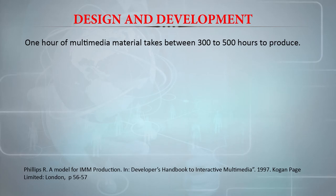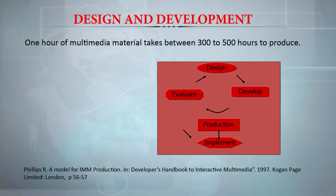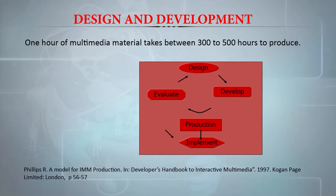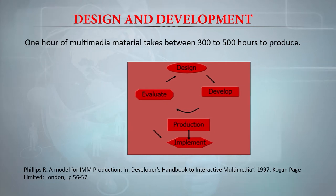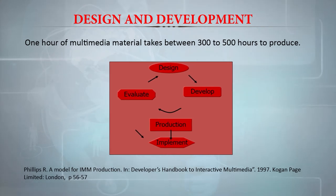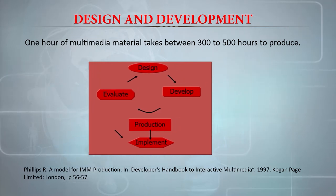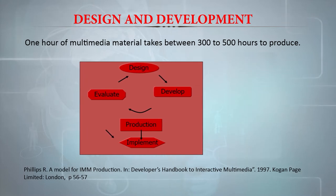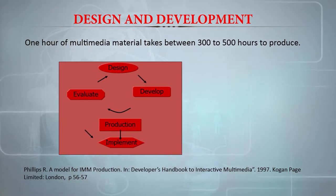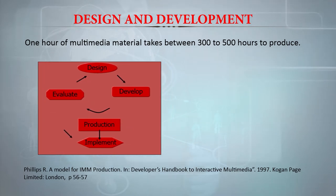The basic elements for designing are: design, develop, and evaluate. Once you design, you evaluate whether the design is going properly. Once the design is approved it goes to development, and after developing the product it again goes to evaluation. Once evaluated it goes for production and implementation. These are the basic minimum flow steps of multimedia development.